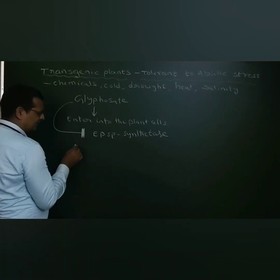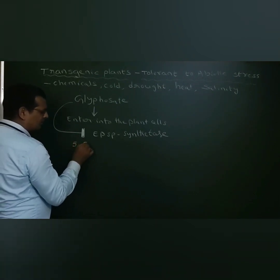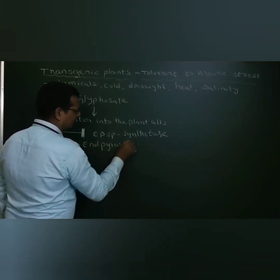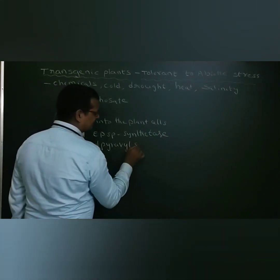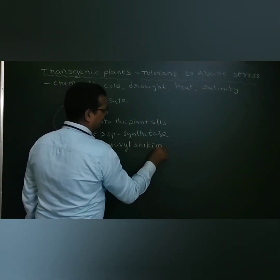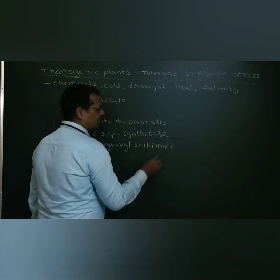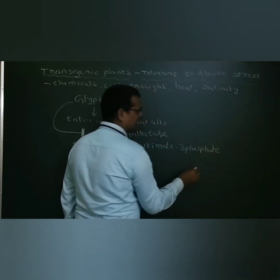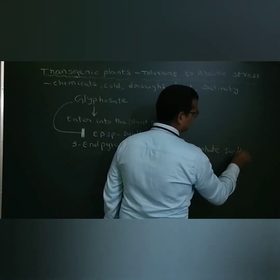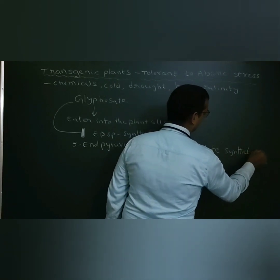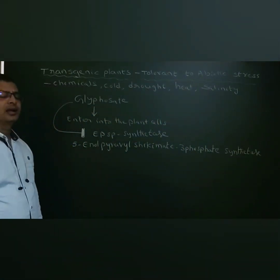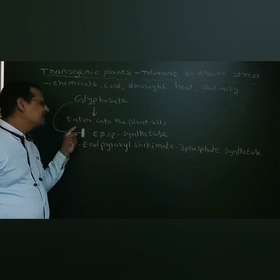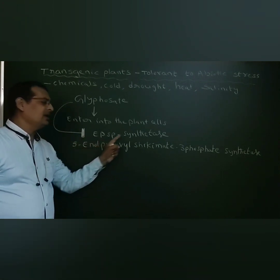EPSP stands for 5-enolpyruvylshikimate-3-phosphate synthase. This enzyme is particularly present in the chloroplast cells. When glyphosate is applied to plant cells, it inhibits the enzyme EPSP synthase, which is present in chloroplast cells.